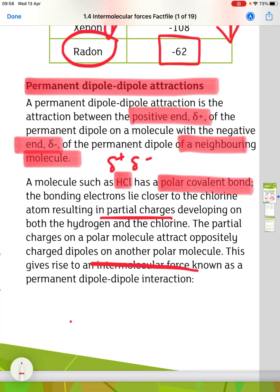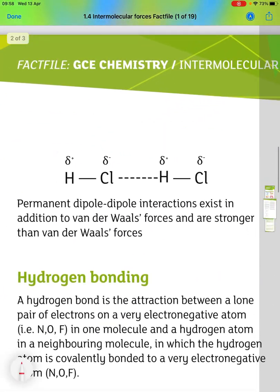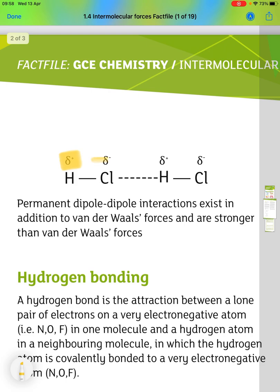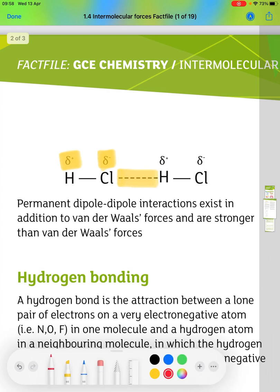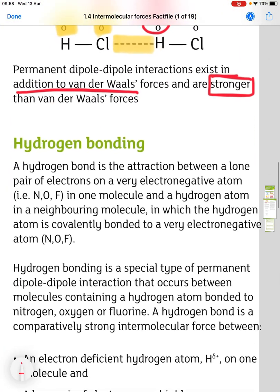Looking at how you would draw it: the hydrogen is slightly positive and the chlorine is slightly negative, and then a dotted line shows the weak bond between them. The chlorine is attracted to the delta plus on the hydrogen. These permanent dipole-dipole interactions exist in addition to van der Waals forces, and they are stronger than van der Waals. So a polar molecule will have both van der Waals and permanent dipole-dipole interactions.